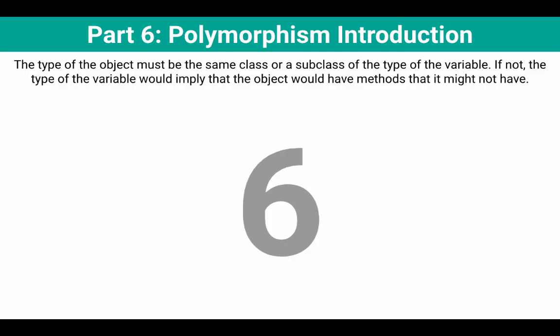Big picture: the type of the object must be the same class or a subclass of the type of the variable. If not, the type of the variable would imply that the object would have methods that it might not have.